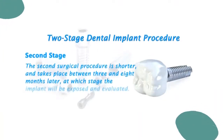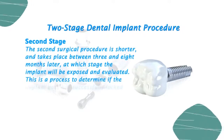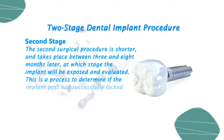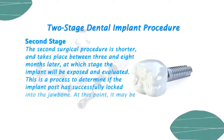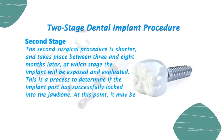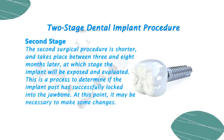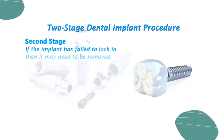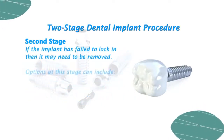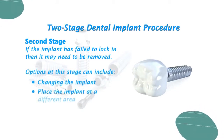The second surgical procedure is shorter and takes place between three and eight months later, at which stage the implant will be exposed and evaluated. This is a process to determine if the implant post has successfully locked into the jawbone. If the implant has failed to lock in, then it may need to be removed. Options at this stage can include changing the implants or placing the implant at a different area.